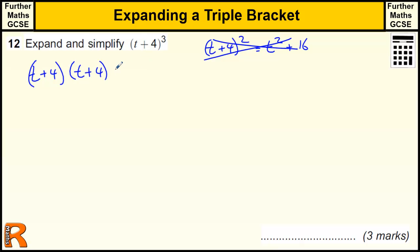Well, when it's cubed, then we just need to times by another (t + 4). So we really just need to expand two of the brackets first and then multiply by this bracket.